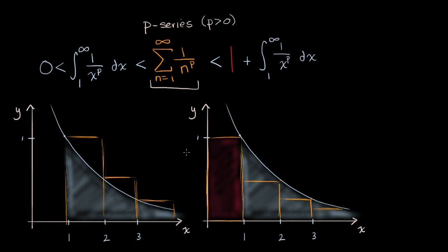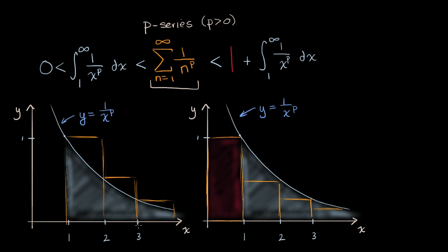I've set up some visualizations to think about how we're going to understand when this p-series converges. Over here you have the graph — this curve right here — that's y equals one over x to the p. Because p is greater than zero, we know it's going to be a decreasing function. Underneath that curve, above the positive x-axis, that is the improper integral from one to infinity of one over x to the p dx. That's the area I have already shaded in — you see it in white in both of these graphs.